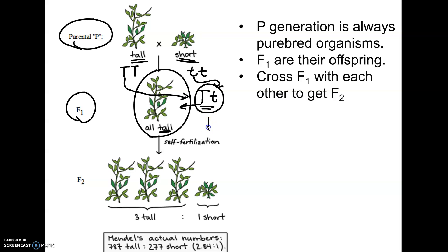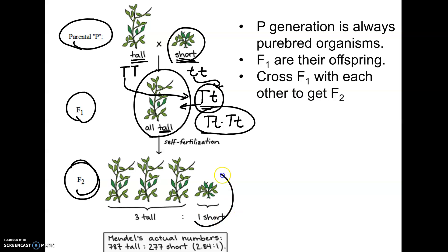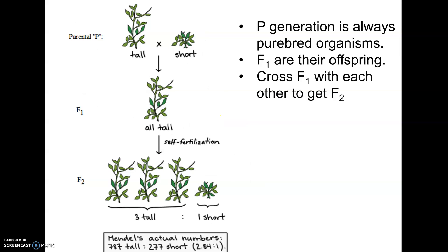The F1 offspring were then crossed with each other — technically he would let them self-fertilize. So you're crossing big T, little t with big T, little t. In the next generation, the F2, he showed that short — the trait that seemed to disappear — hadn't really disappeared. It just got masked for a generation and actually comes back, because these F1 plants are still carrying little t. When you cross two of them, it's possible for one parent to give little t and the other to also give little t, and short comes back. This F1, F2, and P will come up in genetics questions.